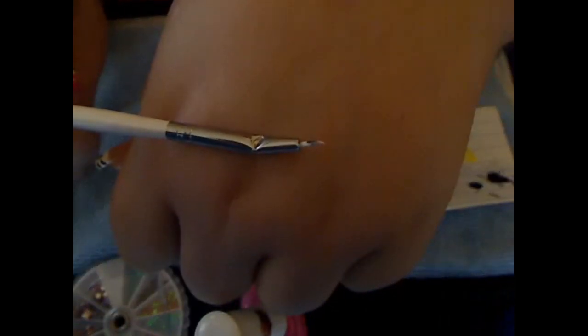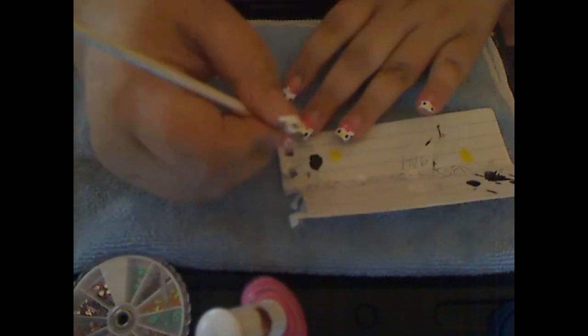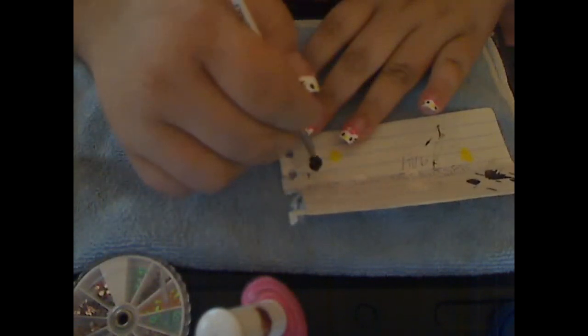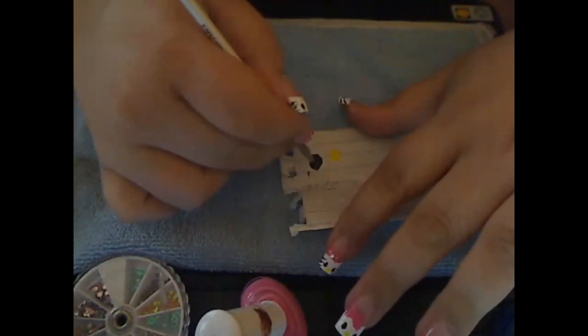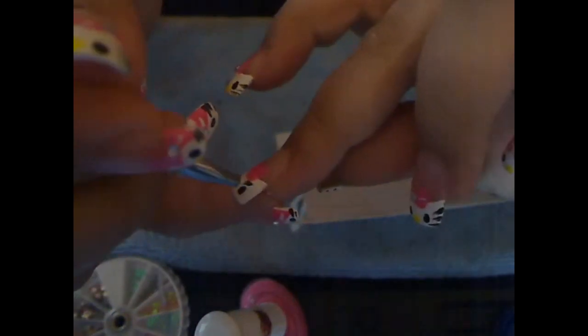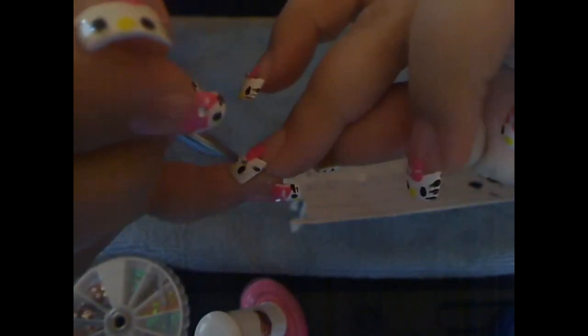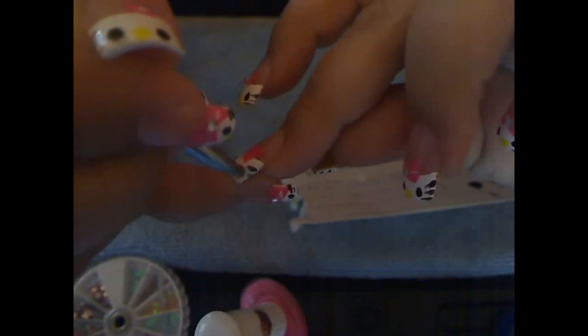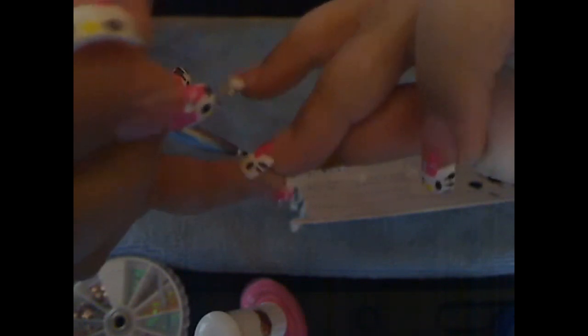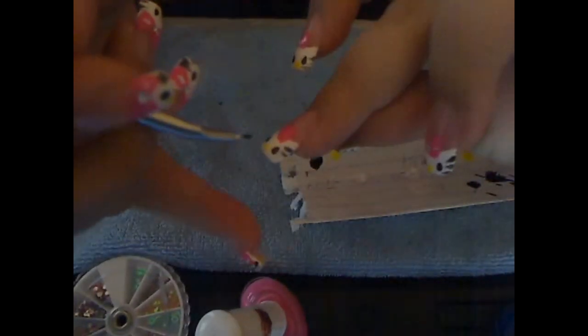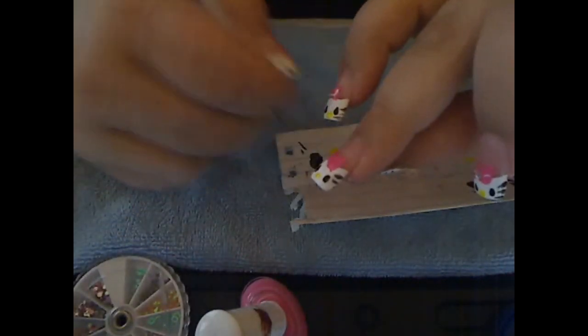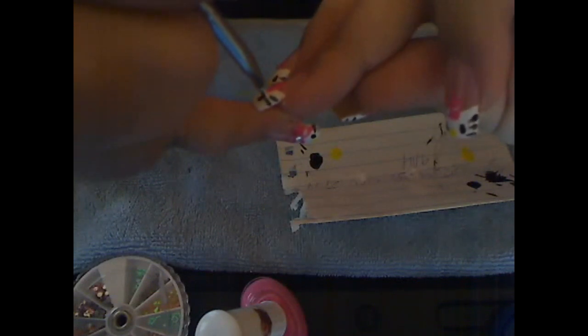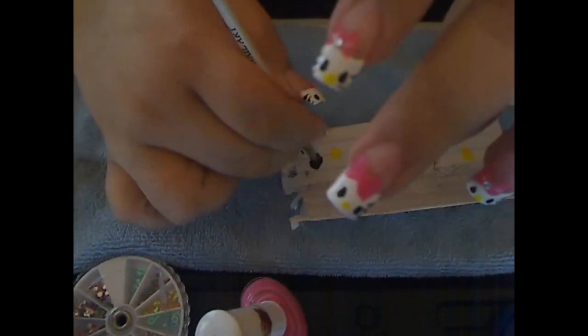Now with a brush like this one, we are going to blob again the black and we are going to do the whiskers. And now the other side.